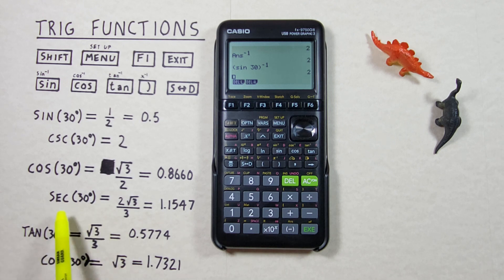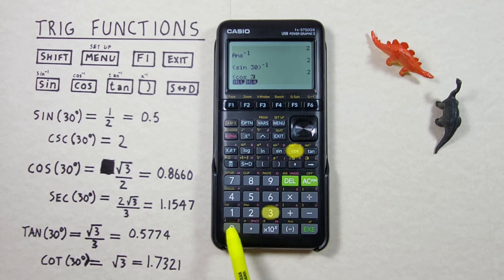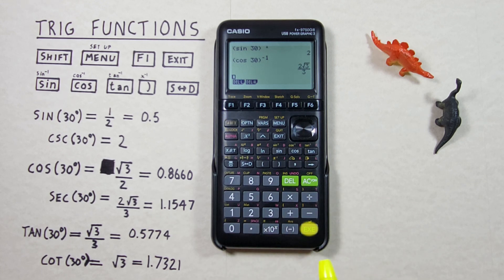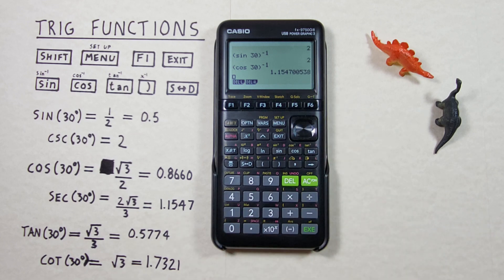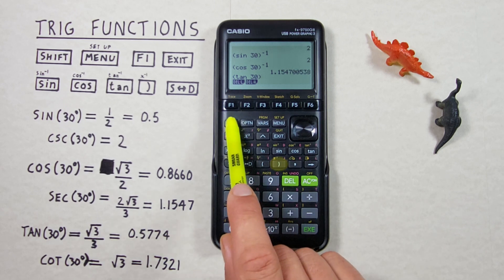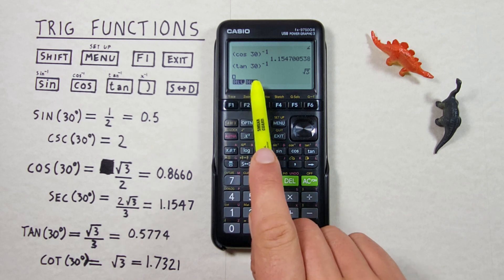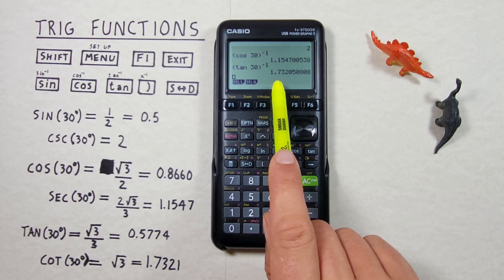For secant we use cosine. So if we want to find the secant of 30 degrees, let's use our brackets — open bracket, cos, 30, close bracket, then shift inverse, and EXE. We get our result, which we can convert to a decimal with the STD key to get 1.1547 etc. For cotangent we use tan — so open bracket, tan of 30, close bracket, shift inverse, EXE — and we get the cotangent of 30 degrees as the square root of 3, which converts to 1.7320 etc.